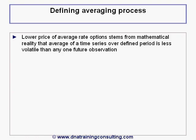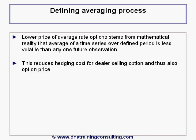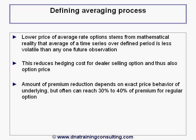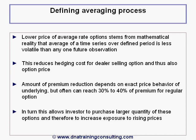The lower price of average rate options stems from the mathematical reality that the average of a time series over some defined period is less volatile than any one observation in the future. This reduces the hedging cost for the dealer selling this option and thus also the price of the option. The amount of the premium reduction depends on the exact price behavior of the underlying, but often can reach 30% or 40% of the premium for a regular option. In turn, this allows the investor to purchase a larger quantity of these options and therefore to increase his exposure to rising prices.